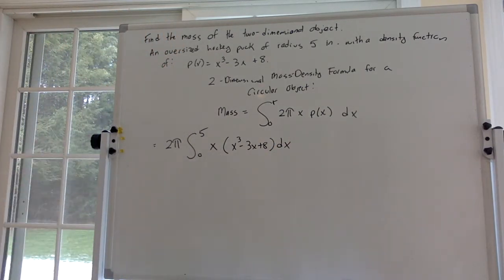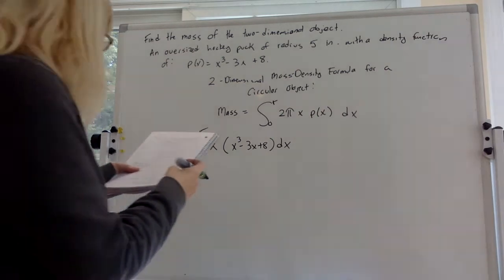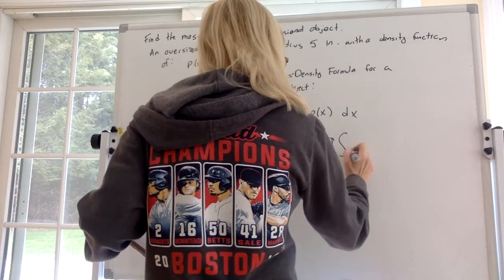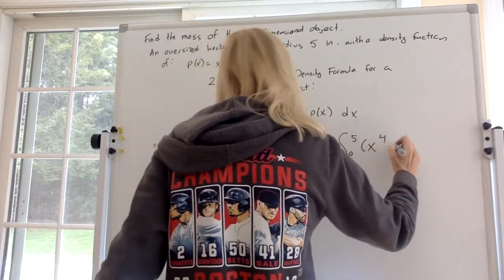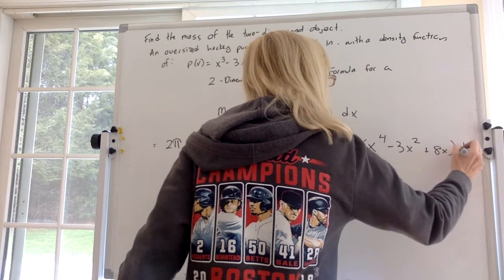So what am I going to do now? I'm going to distribute that x. So 2 pi, 0 to 5, distribute the x. What do we get? x to the 4th minus 3x squared plus 8x dx.